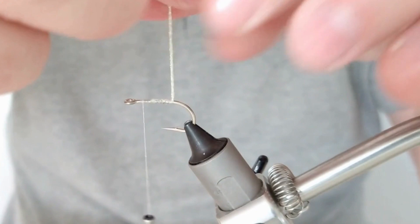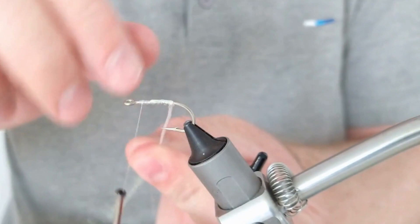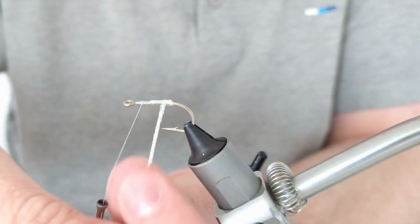So if you want to, just twist your crystal flash, just keep on twisting in the same direction, and then just tie it on up the body.